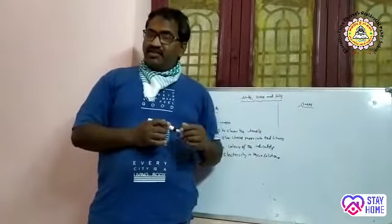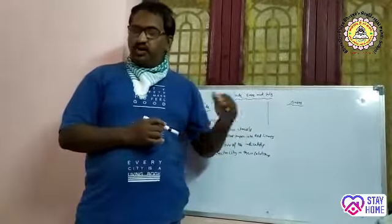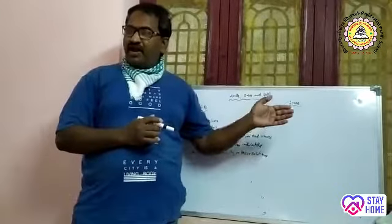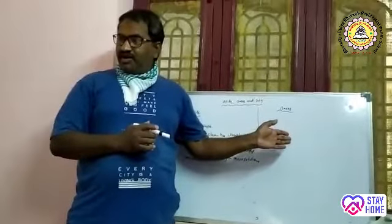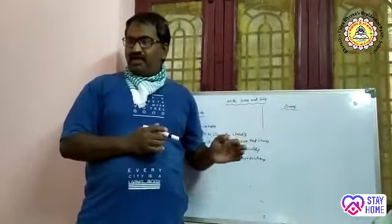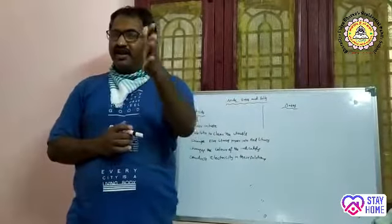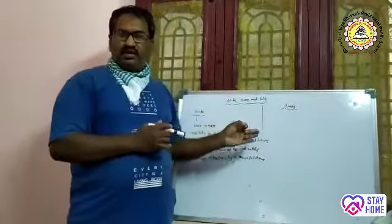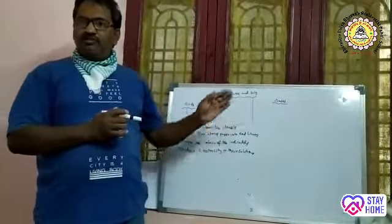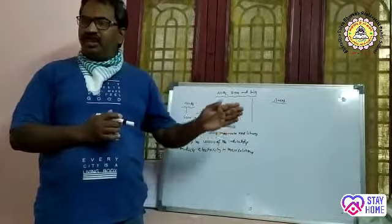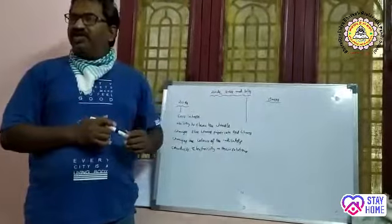Synthetic indicators are man-made indicators. Those indicators which can be prepared in laboratories are called artificial or synthetic indicators. The frequently used synthetic indicators in the laboratory are methyl orange indicator, which is orange in color, and phenolphthalein indicator, which is colorless.